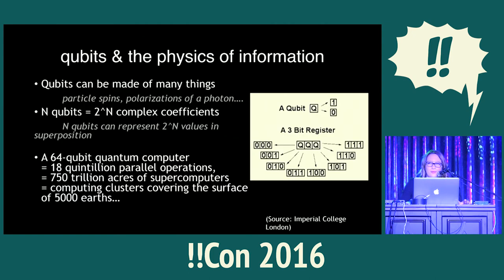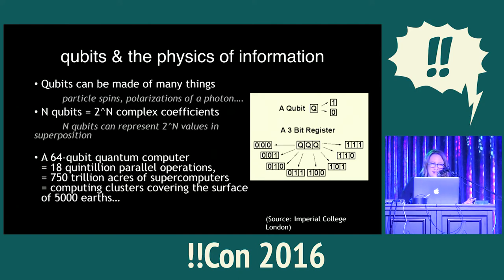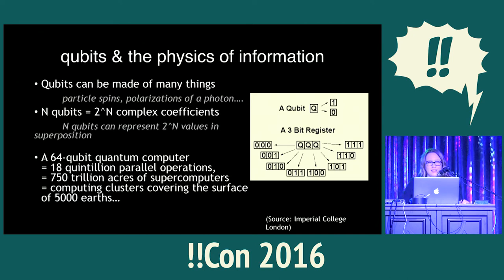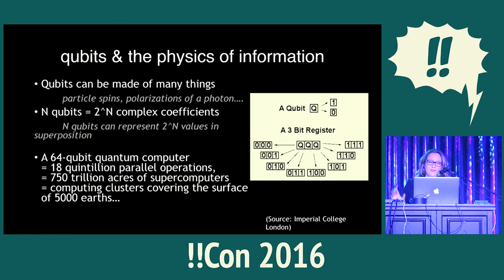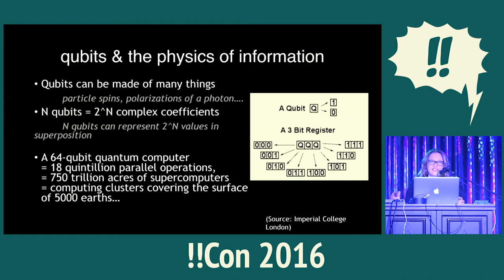I'm really interested in alternative computing architectures. When I was younger I thought you could make a computer out of anything — beer cans, ant farms. Now I make it out of particle spins and polarizations of photons, which is probably better than the time I thought of making a computer out of many cats. So if you have n qubits — let's say three qubits — this can represent something like 2^n complex coefficients.